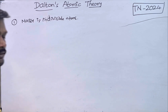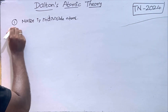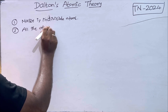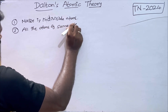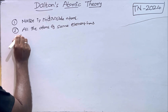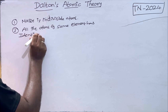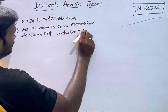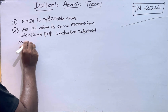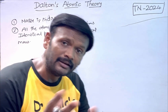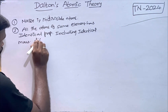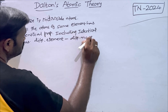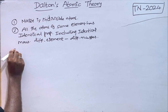Matter is indivisible of atoms — that's the first point. Second point: all the atoms of the same element have identical properties, including identical mass. But different elements have different masses. That's the second concept.